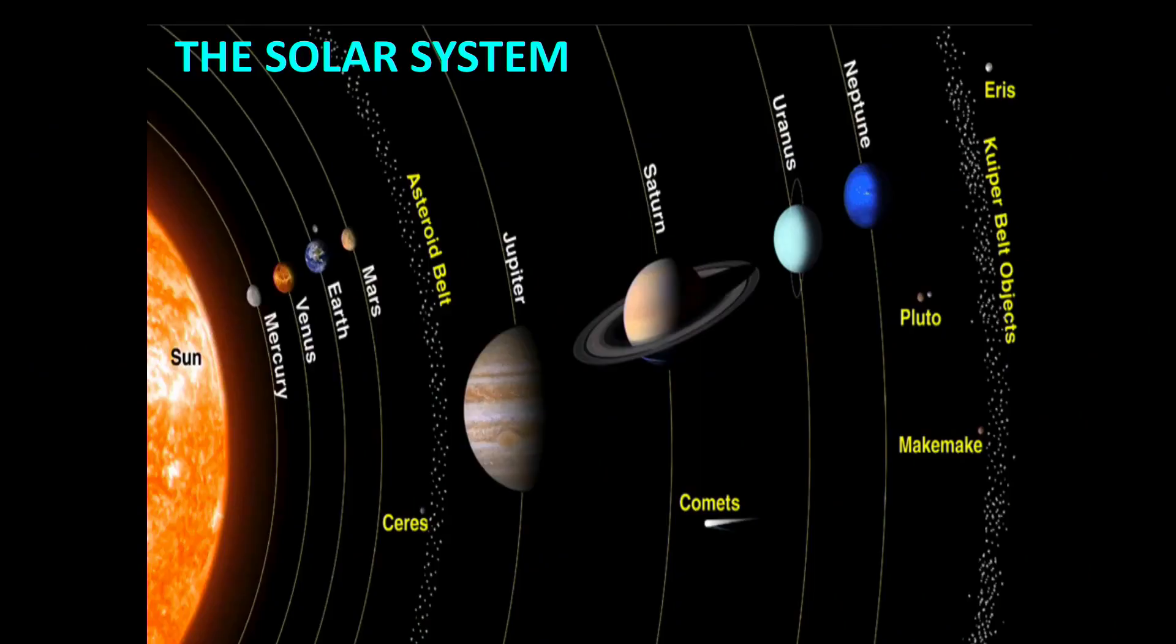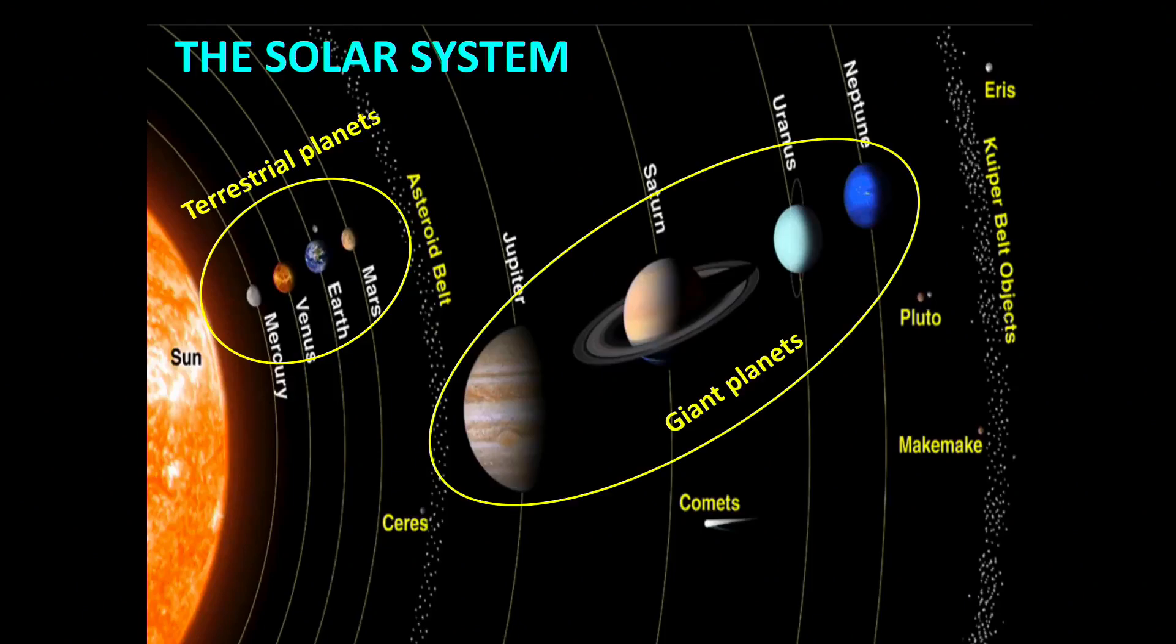Actually, the solar system is divided into parts. The inner part is inhabited by the terrestrial planets, which are small and rocky, and the outer part is inhabited by the giant planets, which have masses from tens to hundreds of Earth masses and contain a lot of gases, hydrogen and helium.